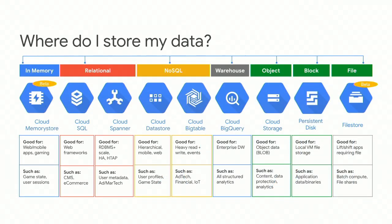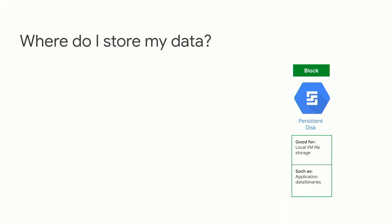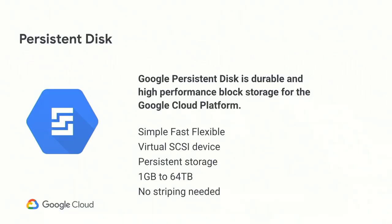Starting with a quick introduction around Persistent Disk. With GCP, you get many options around how you store data — databases including in-memory, relational, NoSQL, and data warehouses. On the storage side, we have block, object, and file. In this session, we're mainly focusing on block storage for GCP, which is Persistent Disk. Persistent Disk is a highly durable, high performance block storage. It's simple, fast, and flexible — providing a virtual SCSI device that can scale from one gigabyte to a 64 terabyte size.